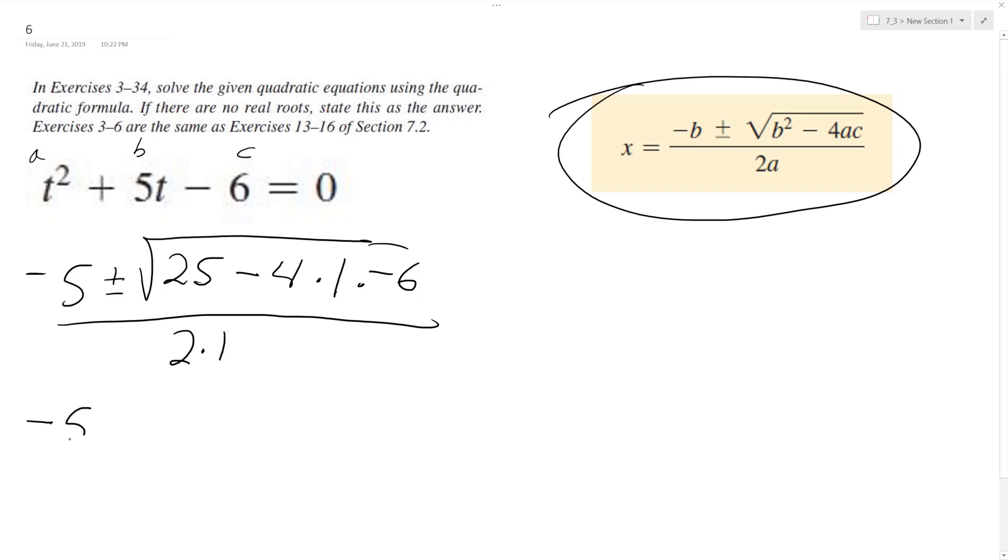So we have negative 5 plus or minus square root of 25 plus 24 all over 2. So then we get plus or minus 49 squared all over 2.